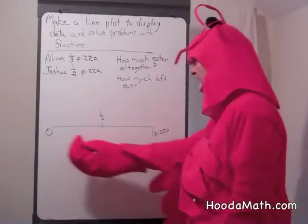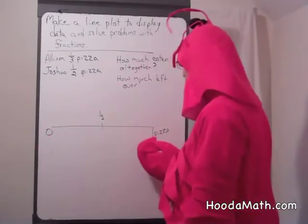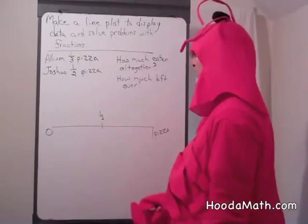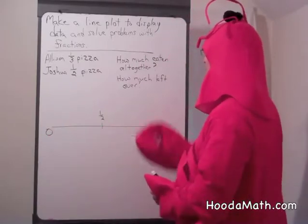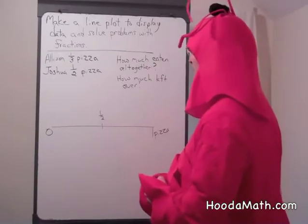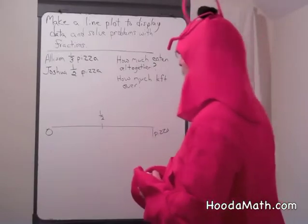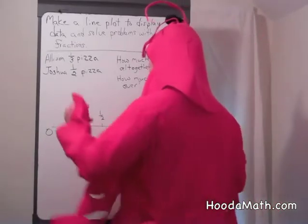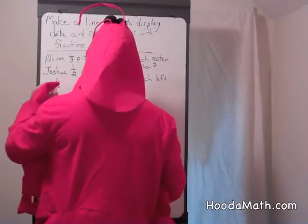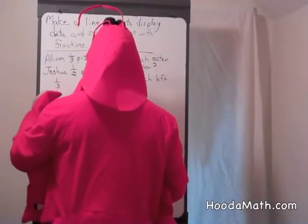This line shows you one whole pizza. This would be half a pizza. First we want to see how much they ate altogether, so we would combine one-third plus one-half.